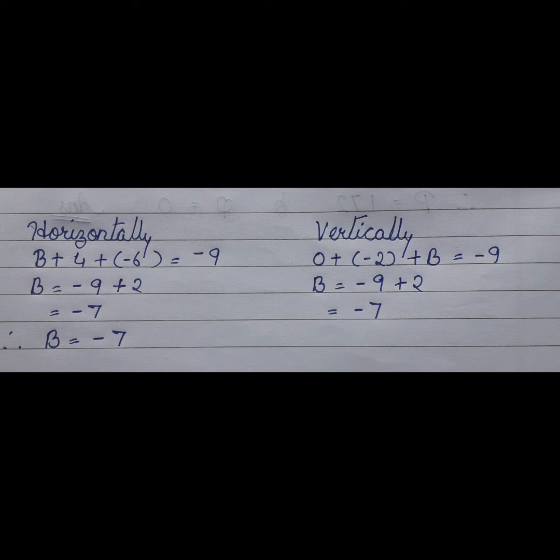Let us calculate B vertically. 0 plus minus 2 plus B is equal to minus 9. B is equal to minus 9 plus 2, so I get the answer for B is equal to minus 7.